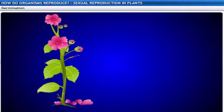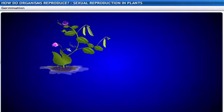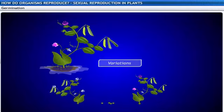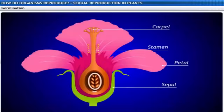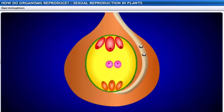This is the end of our discussion on sexual reproduction in flowering plants. In this lesson, you learnt about the importance of sexual reproduction, the reproductive parts of a flower, and the process of reproduction in a flowering plant. To revisit the key points covered in this lesson, please review the flashcard at the end of this lesson.